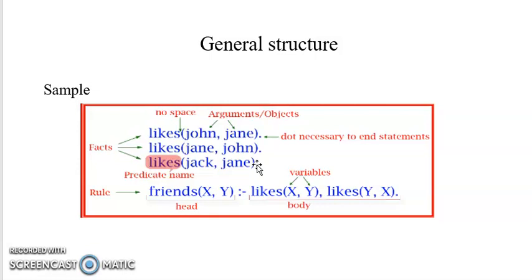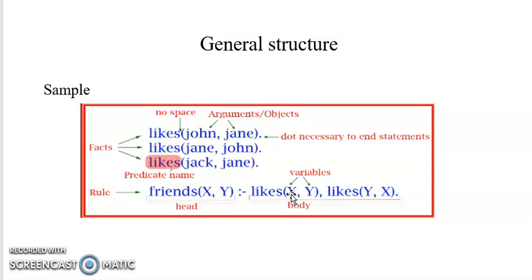As discussed in our Chapter 4 session, when defining a knowledge base we have to include both facts and rules — rules are mandatory in addition to facts. For example: 'friends(X, Y) — X and Y are friends if X likes Y and Y likes X.' This is the general rule that defines a friend relationship: two individuals are friends only if both like each other.